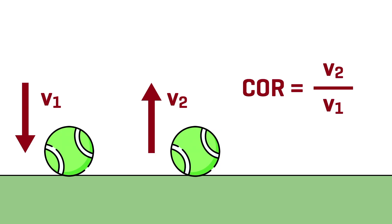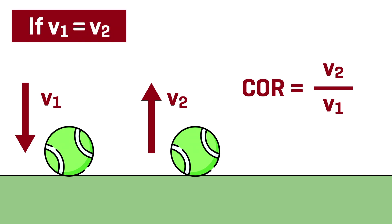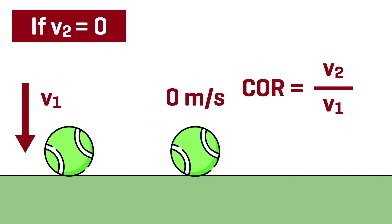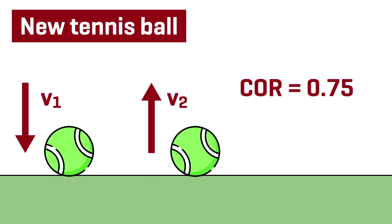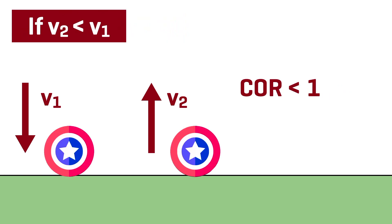We relate those velocities using the coefficient of restitution. The coefficient of restitution is V2 over V1. If V1 equals V2, the coefficient is equal to 1. If V2 equals 0, the coefficient is equal to 0 — this is more likely the case for a bag of cement. For a new tennis ball, the coefficient of restitution is 0.75, and for Captain America's shield, the coefficient of restitution is less than 1, but it might be quite close to 1.